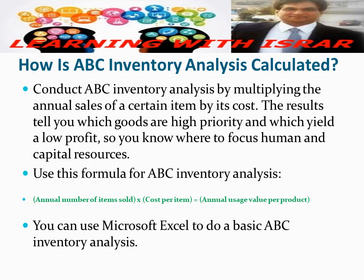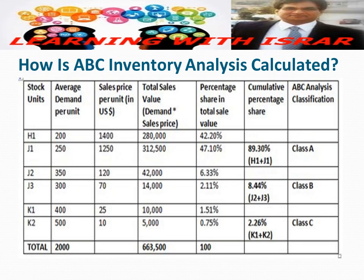You can use Microsoft Excel to do a basic ABC inventory analysis. Your spreadsheet will include columns for stock keeping unit, average amount per unit, price per unit, total, percentage of total sales, and cumulative percentage. For example, the first two products may represent 90 percent of your sales — that's Class A. The next tier might be around 8 percent — Class B — and the remaining 2 percent is Class C.